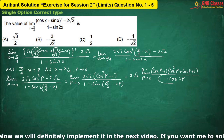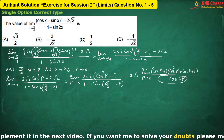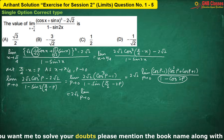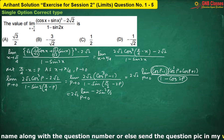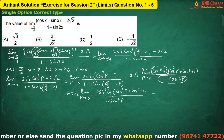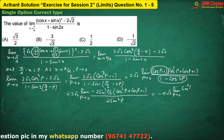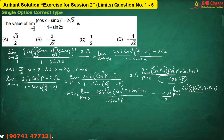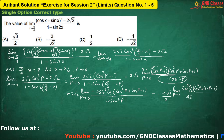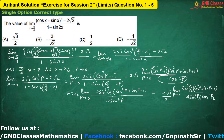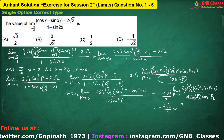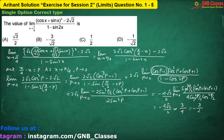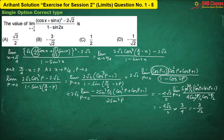Now, 1 minus cos 2p in the denominator can be replaced by 2 sine square p. And in the numerator, we are having cos p minus 1, which can be replaced by minus 2 sine square p by 2. So we are having. Sine p can be written as 2 sine(p/2) cos(p/2), so sine square p can be written as 4 sine square(p/2) cos square(p/2). Sine square p by 2 cancels. Now, if I put the limiting value, we are having. So it is coming to minus 3 by root 2. Therefore, option B is correct.